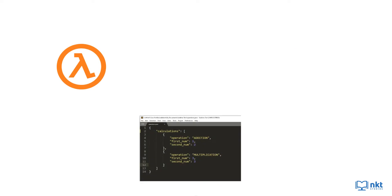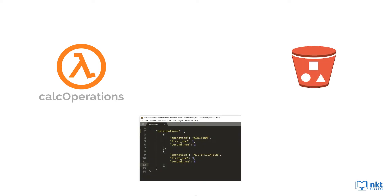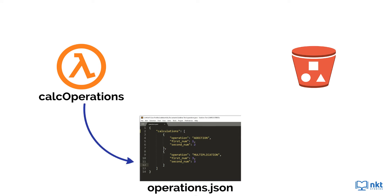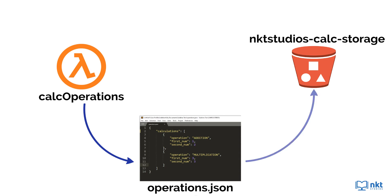For this application, we'll have a Lambda function, a JSON file, and an S3 bucket. The Lambda function will be called Calc Operations. This function will process the file called OperationsJson to compute the result. The S3 bucket is called NKT Studios Calc Storage, and it is where the JSON file will be uploaded.